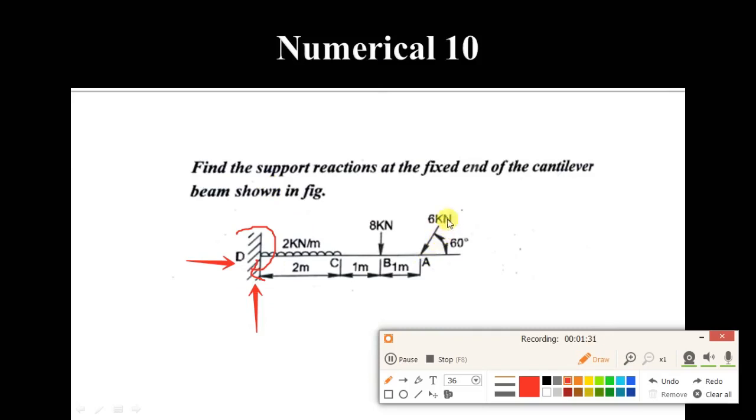The load is UDL, the part is UDL. Given the difference in the horizontal and vertical, the horizontal component can be used as a vertical component. 6 kilonewton load, 6 cos 60, 6 cos 60.